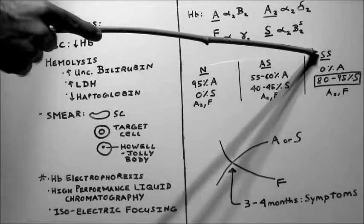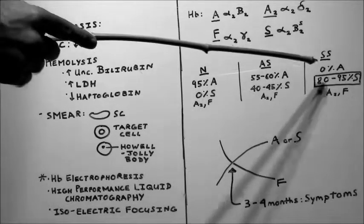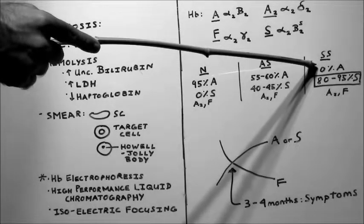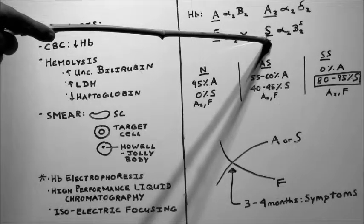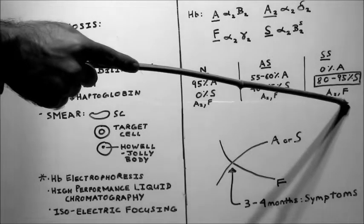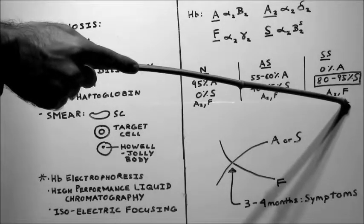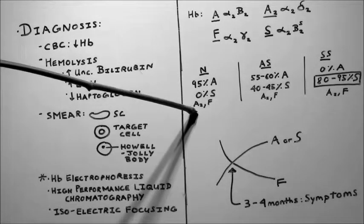In a person with sickle cell anemia, they have no normal beta chains. So they have 0% hemoglobin A. And instead they have 80% to 95% hemoglobin S. And they also have a little bit of A2 and F. And hemoglobin F is elevated in people with sickle cell anemia compared to normal adults.